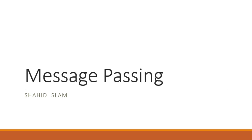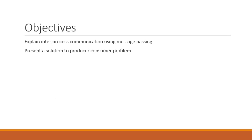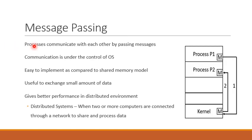Message passing. The objectives of this lesson include explaining inter-process communication using the message passing model. I will also present a solution for the producer-consumer problem using a message passing scheme. In the message passing model, processors communicate with each other by passing messages.